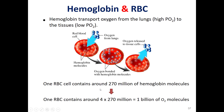Each RBC contains around 270 million hemoglobin molecules. Since each hemoglobin has four heme groups and carries four molecules of oxygen, by multiplying 4 by 270 million, each RBC can carry around 1 billion oxygen molecules.